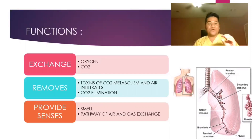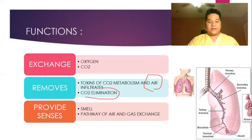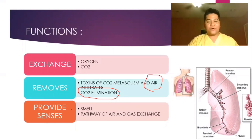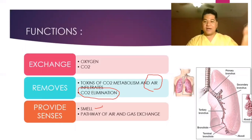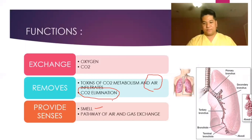Another function is that it removes toxins — carbon dioxide from metabolism and other air infiltrates. Carbon dioxide is eliminated through different ways, like when you breathe it out and through tissue elimination. The respiratory system also provides the sense of smell, and it is the pathway of air from outside going inside your lungs to be oxygenated. That is the function of your pulmonary or respiratory system.